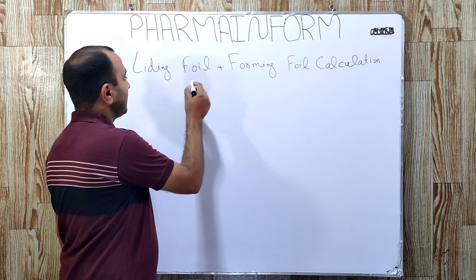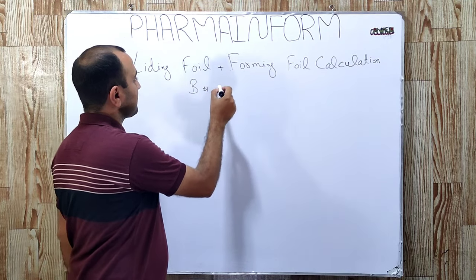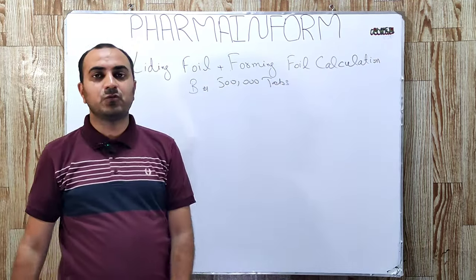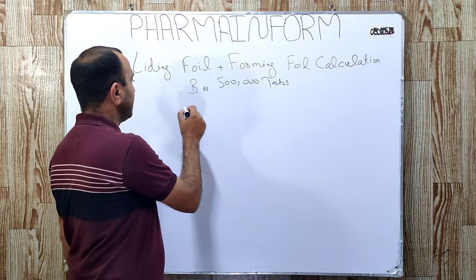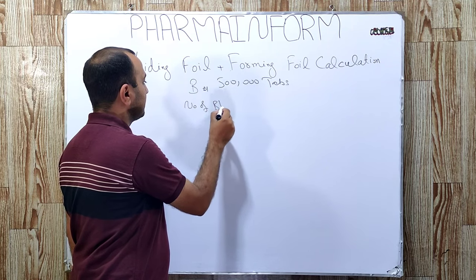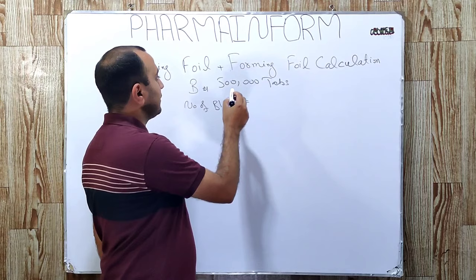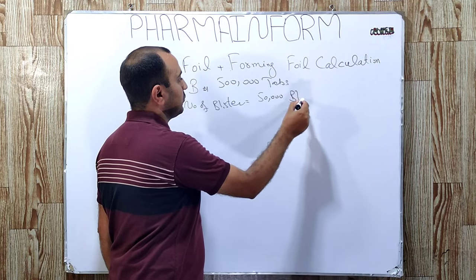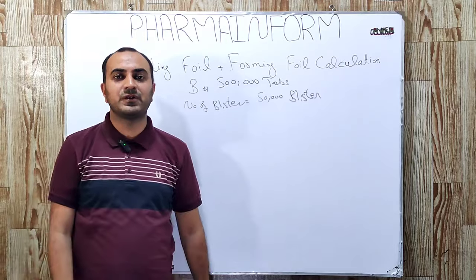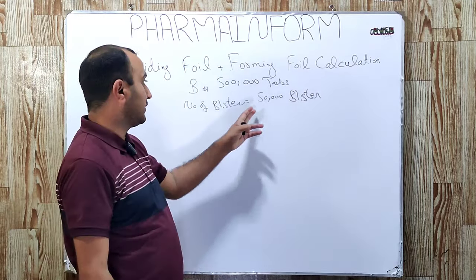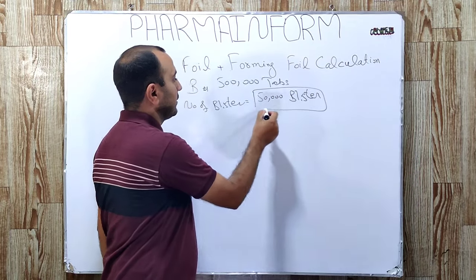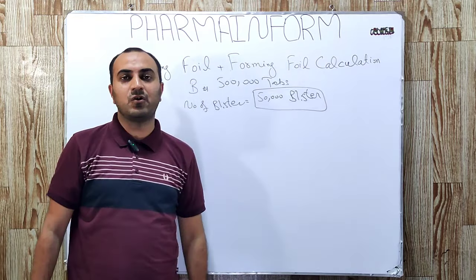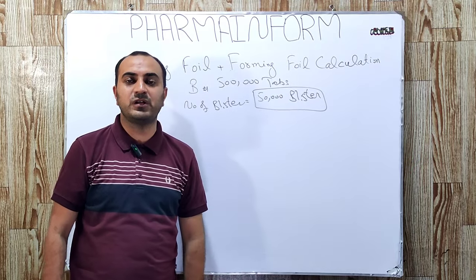Suppose we have a batch size of 5 lakh tablets and we want to blister this batch. Each blister contains 10 tablets, so the number of blisters will be 5 lakh divided by 10, which equals 50,000 blisters. If you do not know how to calculate blisters from number of tablets, the link to that video is given in the description. So we want to blister 50,000 blisters — how much leading foil and forming foil is required?